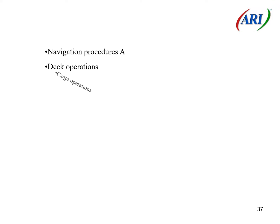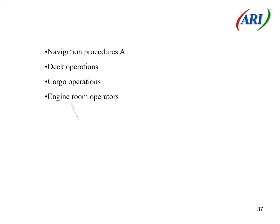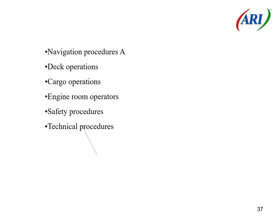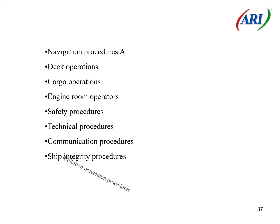Shipboard operations categories: Navigation procedures, Deck operations, Cargo operations, Engine room operations, Safety procedures, Technical procedures, Communication procedures, Ship integrity procedures, Pollution prevention procedures.